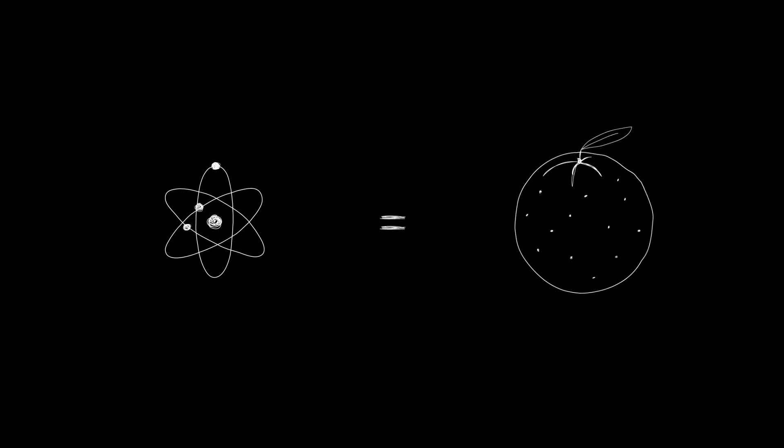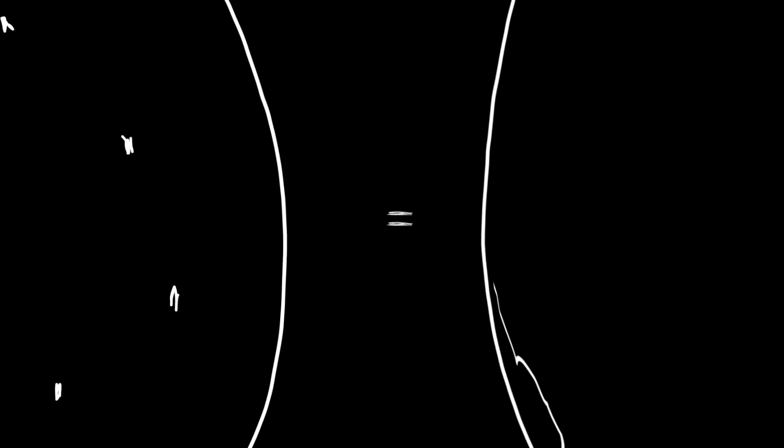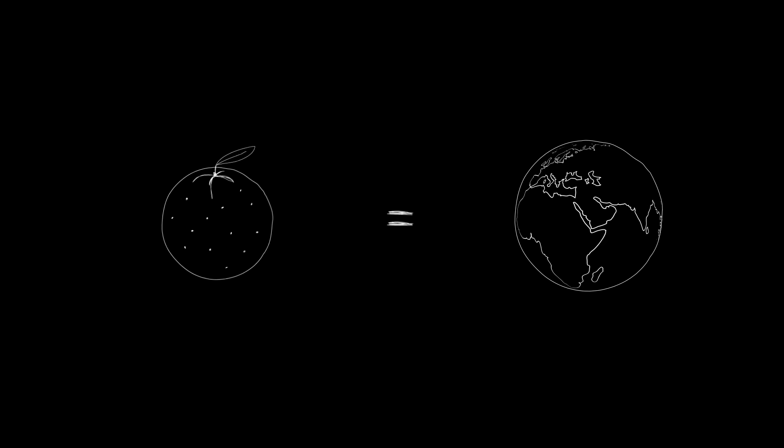When we see the image in the microscope, we see it magnified about 100 million times. If an atom was the size of an orange, then the orange would be the size of the whole planet Earth.